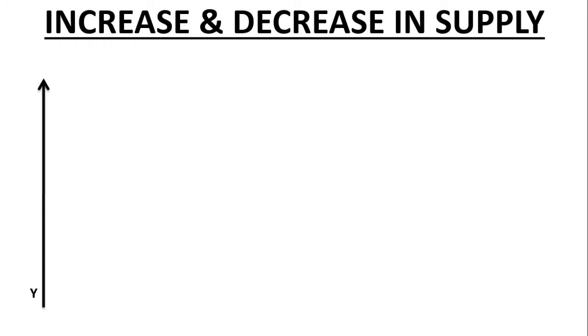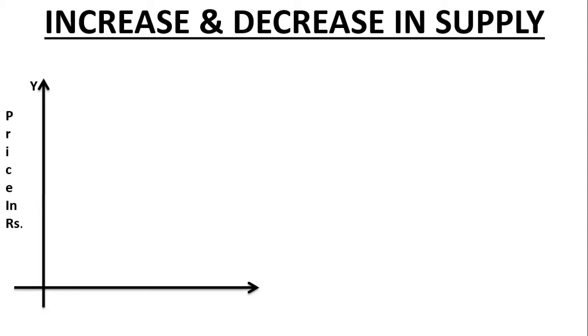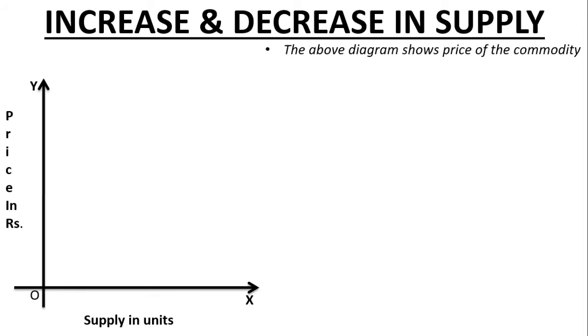Let us see the diagram of increase and decrease in supply. First, I am drawing the y-axis — price in rupees will be recorded on the y-axis. Next is the x-axis — supply in units will be recorded on the x-axis, and the point of origin will be O. In the above diagram, it shows price of the commodity on the y-axis and supply of the commodity on the x-axis.